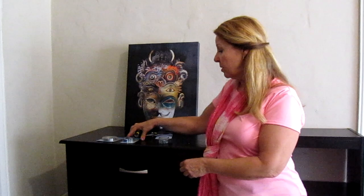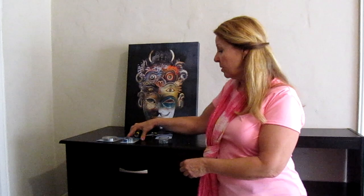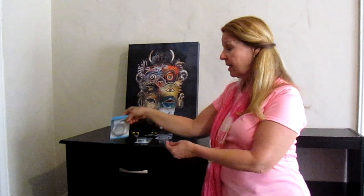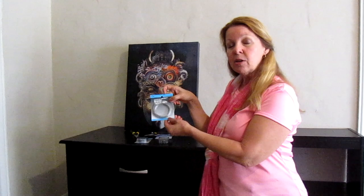You need molding hooks that hang over the picture molding, and the wire will hook onto that. Then you'll take some extra braided wire or fishing line and hook that over your hook and fasten it to the back of your painting.